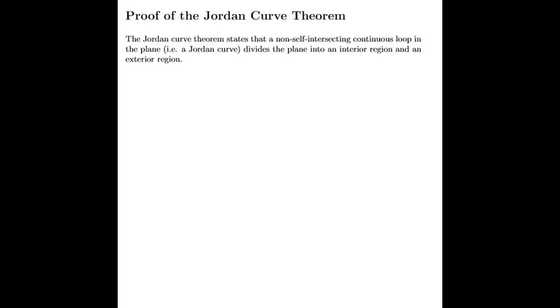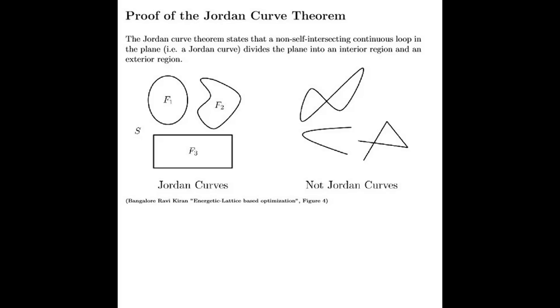The Jordan Curve Theorem states that a non-self-intersecting continuous loop in the plane, i.e. a Jordan curve, divides the plane into an interior region and an exterior region. These are Jordan curves. These are not Jordan curves.